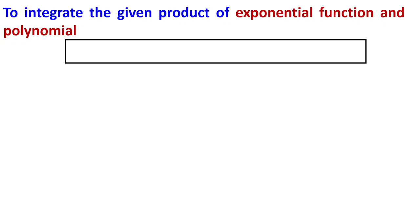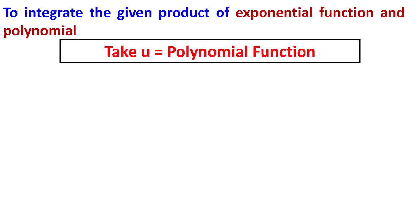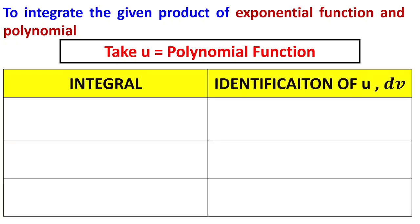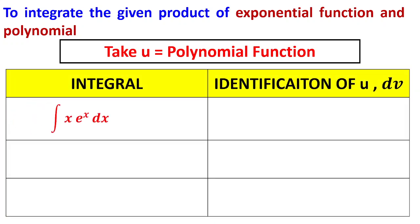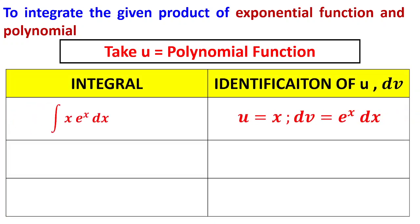When an exponential function and a polynomial appear together, you should take u as the polynomial. Only when you take u as the polynomial will it get reduced step by step. For example, if the integral is x·eˣ, you should take u as x and dv as eˣ dx.